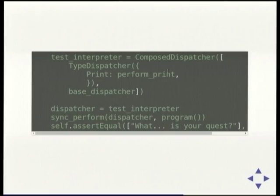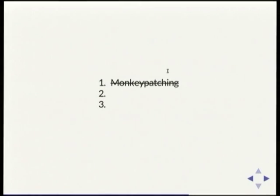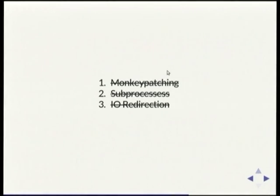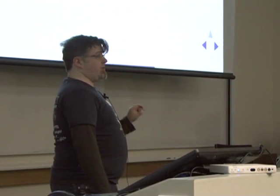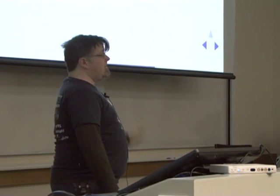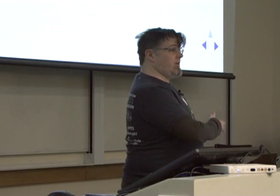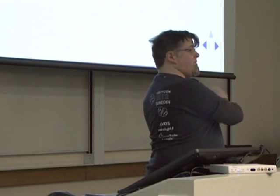I create a dispatcher that dispatches out to that, giving me my test interpreter. I perform it synchronously — note: sync_performer and sync_perform are terrible names, we'll get nicer stuff in a second. We have fixed all of these things: I did not need to monkey-patch my program, I did not need sub-processes, I did not need IO redirection. I need to test my production interpreter once and only once — perhaps using sub-processes — but all the rest of my code, however big it gets, I'll never need to touch that again.